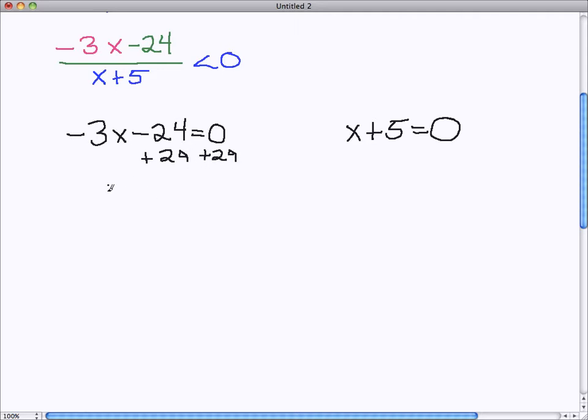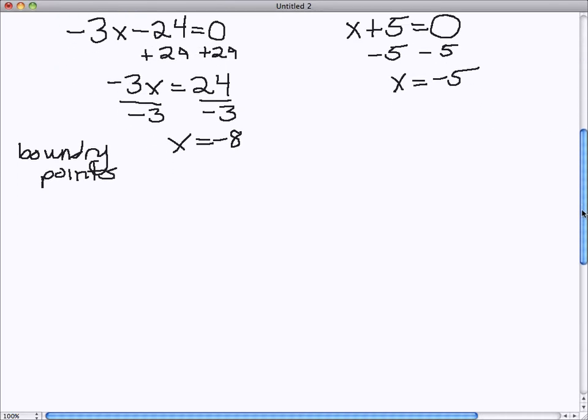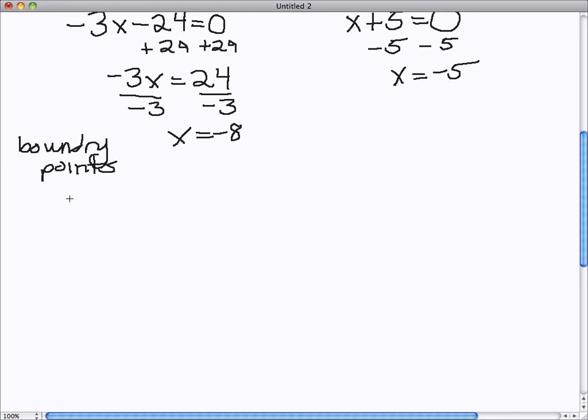So I'm going to go ahead and do some solving for x. I'll deal with each one separately. I know those turned out to look like 29s, but I promise they're really 24s. And get my first boundary point of negative 8. I'm going to label these for you. And my second one is actually a little bit easier, because we're just going to subtract 5 from both sides.